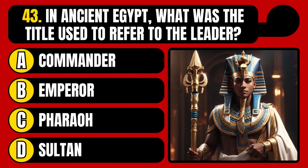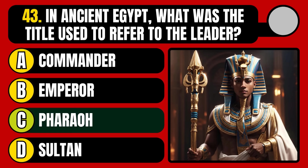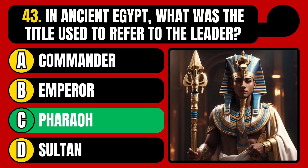In ancient Egypt, what was the title used to refer to the leader? Commander, emperor, pharaoh, or sultan? The correct answer is option C, pharaoh.